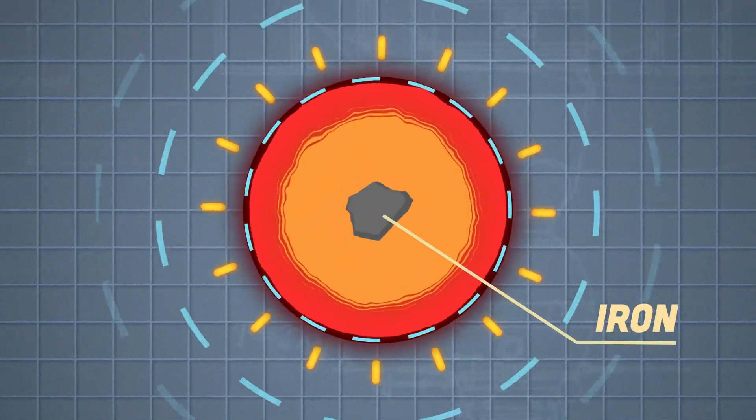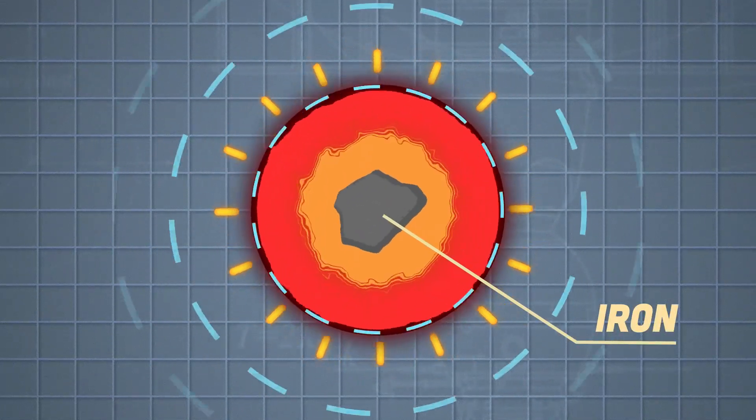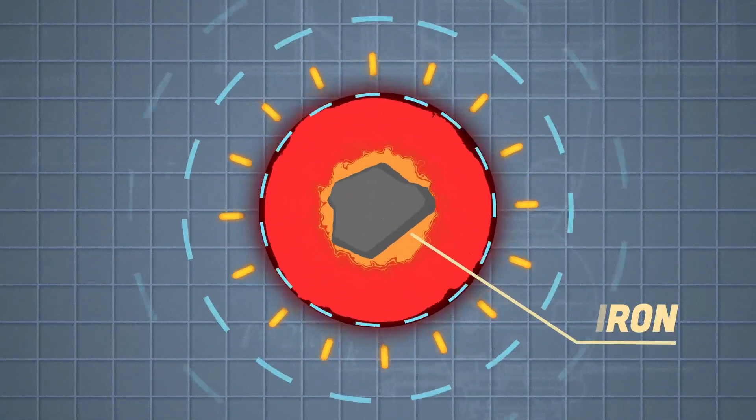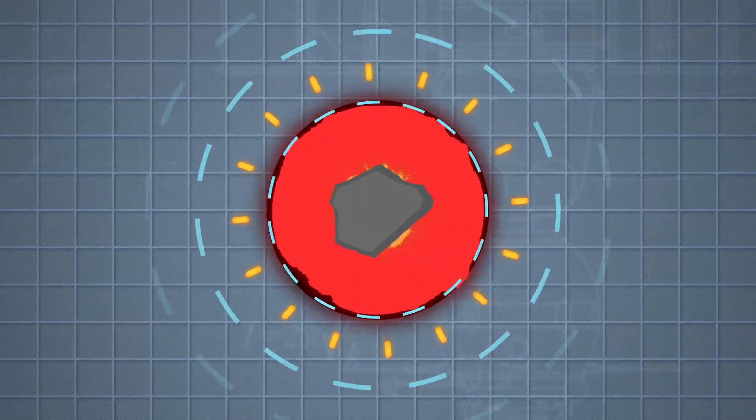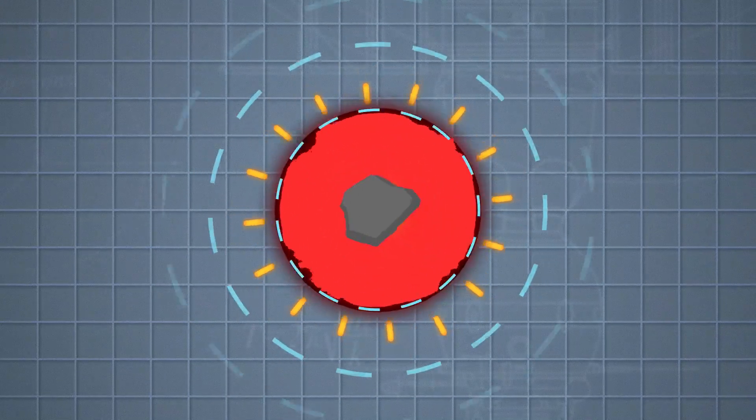The star's core turns into iron, the ash of the once-nuclear core. Because there's no more energy pushing outward, gravity squeezes more. This enormous pressure from gravity crushes the star's core.